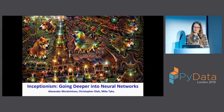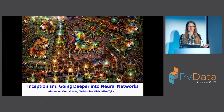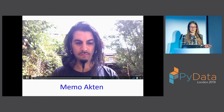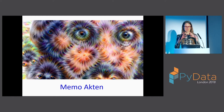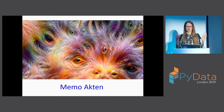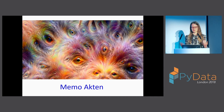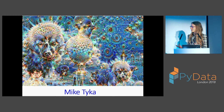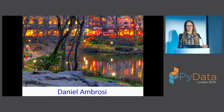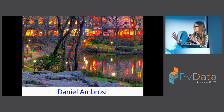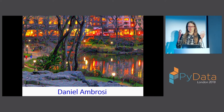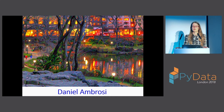If you look at the mainstream interest in this space, I think it really kicked off with Deep Dream, which came out of Google about three years ago. Here is an image of an artist called Memo Acton, and you can see how his photograph transforms into this image with lots of multicolored dogs and pagodas because the neural network works to emphasize the features in the image. Other artists such as Mike Taika have created work in the space, and also Daniel Ambrosie, who actually combined the techniques of Deep Dream with computational photography.